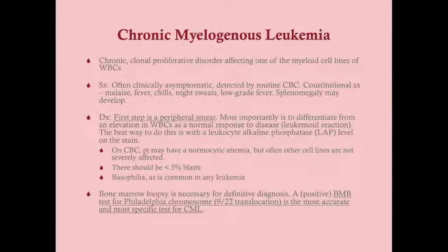For diagnosis, you'll be tipped off by this indolent long-term disease with constitutional symptoms, and your CBC showing an elevated white blood cell count. A peripheral smear is ordered in conjunction with the CBC. From the peripheral smear, you need to differentiate CML from a normal elevation in white blood cell count — a leukemoid reaction.